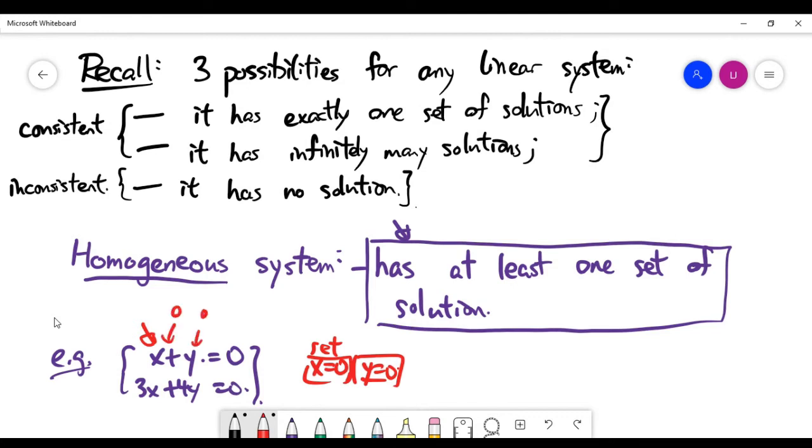You can try to plug in and see what happens. When you plug in x equals zero, y equals zero, no matter what coefficient you have attached to the variable, the right-hand side must be zero when x is zero and y is zero.